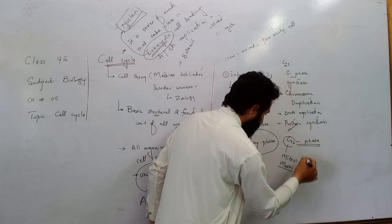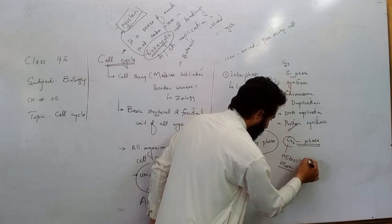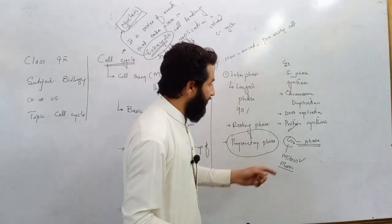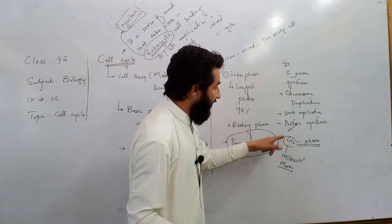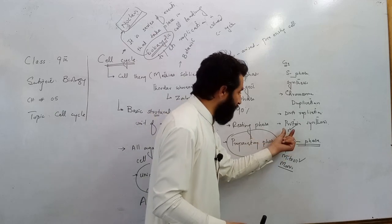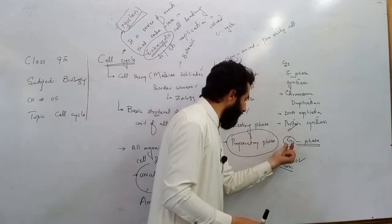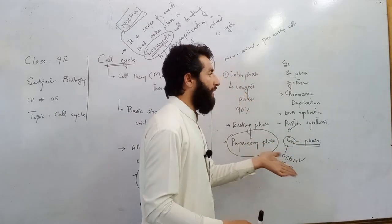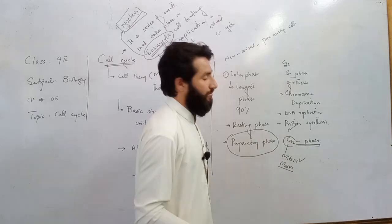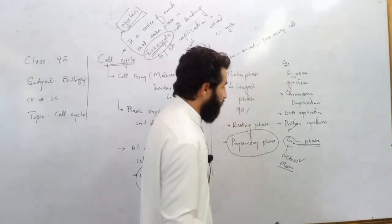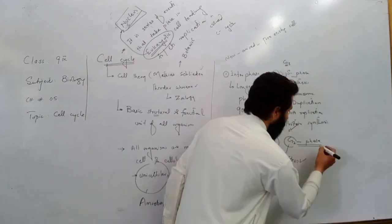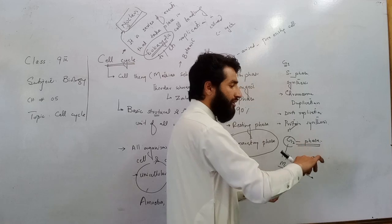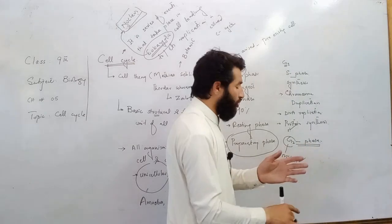G2 phase occurs between the S phase and the active division phase, which may be mitosis or meiosis. That is why it is known as the interface between S phase and the division phase. G2 phase is where replication is complete.